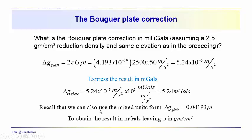Remember, this is often a shortcut we use. We went through the development of this factor — 4.193 times 10 to the minus tenth. If we want our delta G in milligals rather than meters per second squared, and we want to mix units with density in grams per cubic centimeter and thickness in meters, we can use the constant 0.04193 to do that. You should get about 5.24 milligals.